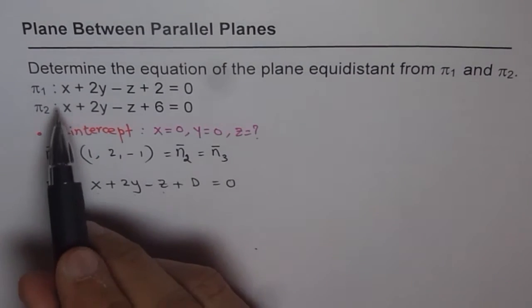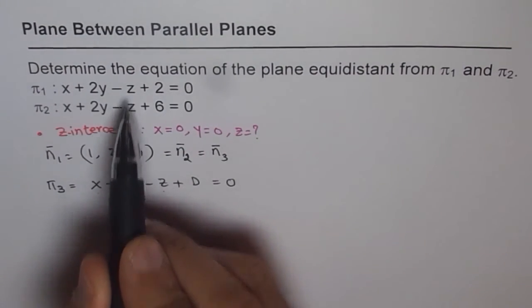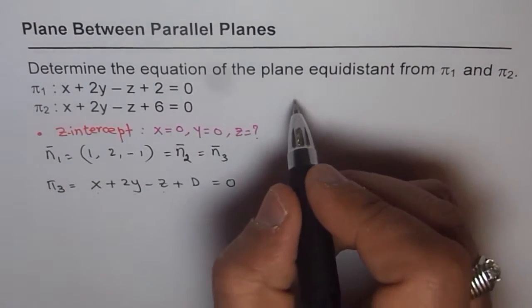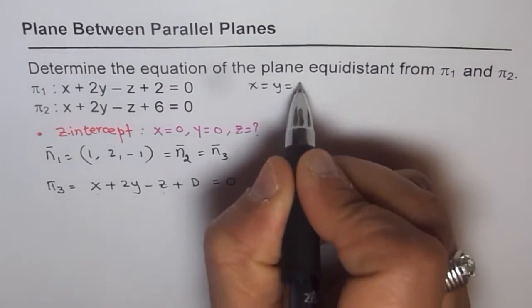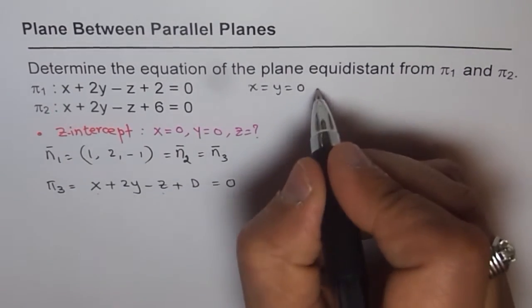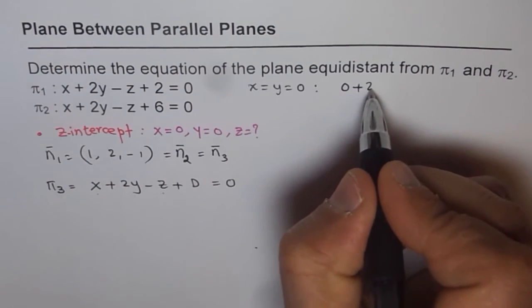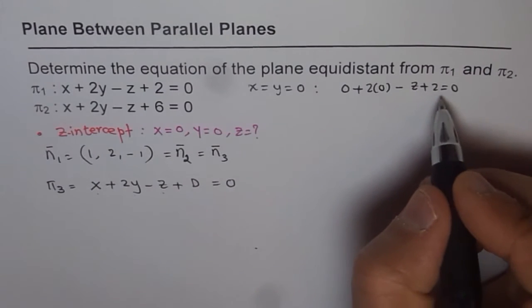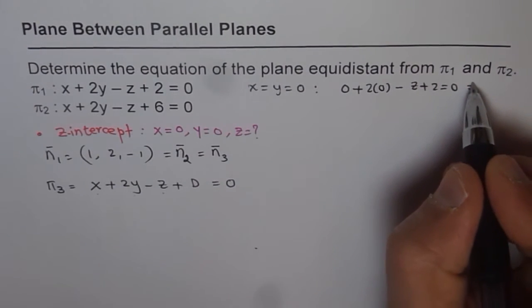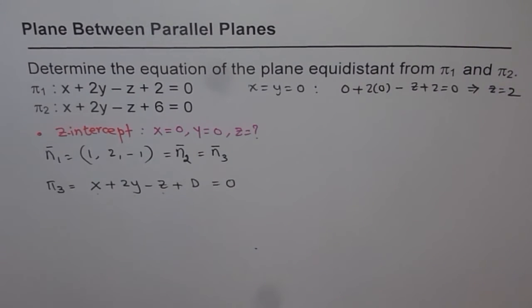For the first equation, π1, if I write 0, 0, then what is z equals to? In this equation, we can substitute x = y = 0, and if we do that, we get 0 + 2(0) - z + 2 = 0, and that means z = 2. So that is the value of z.